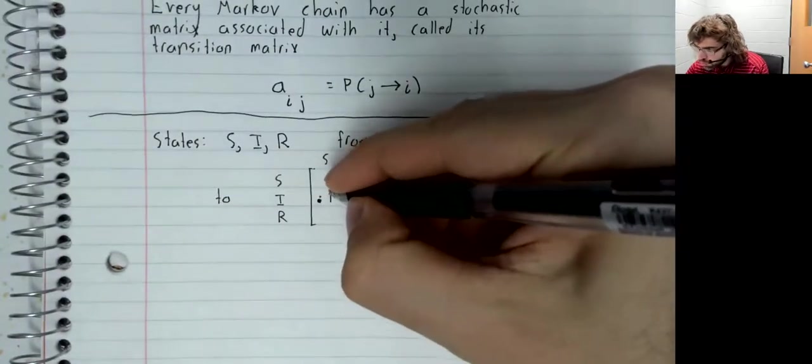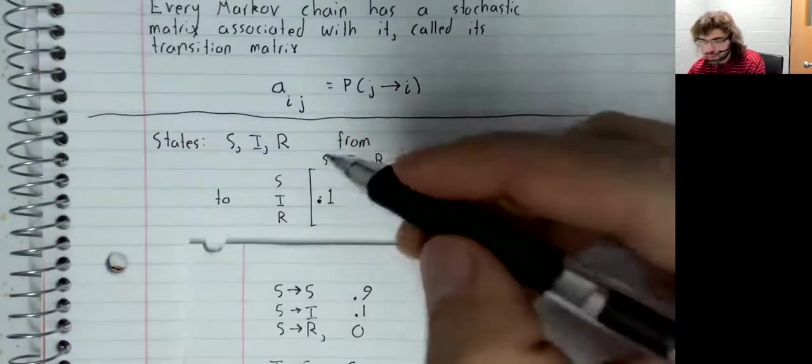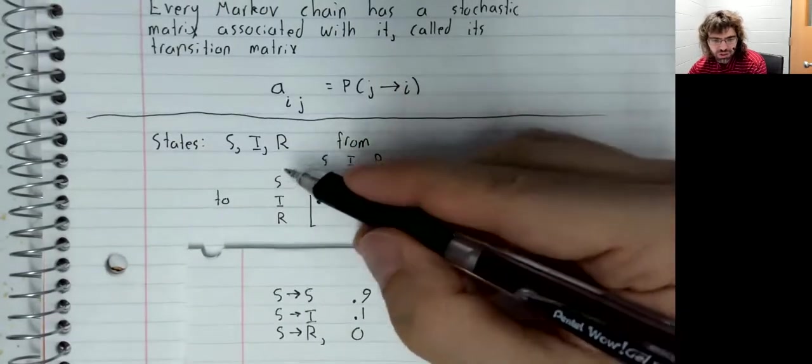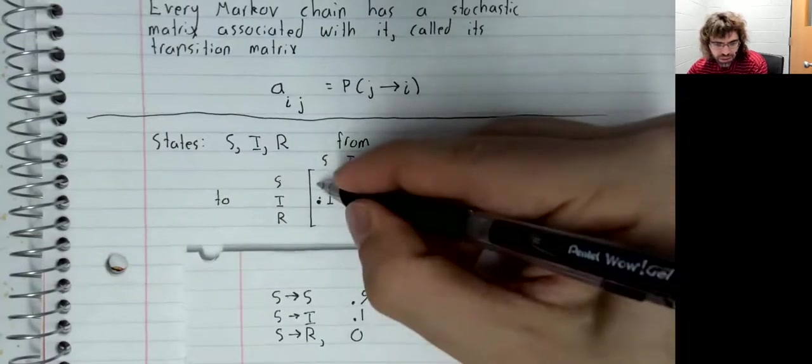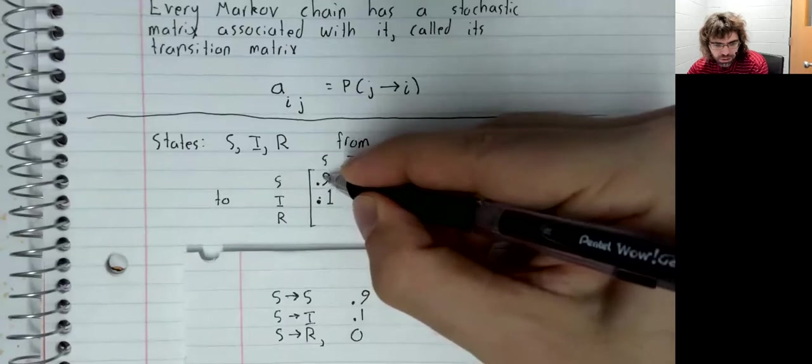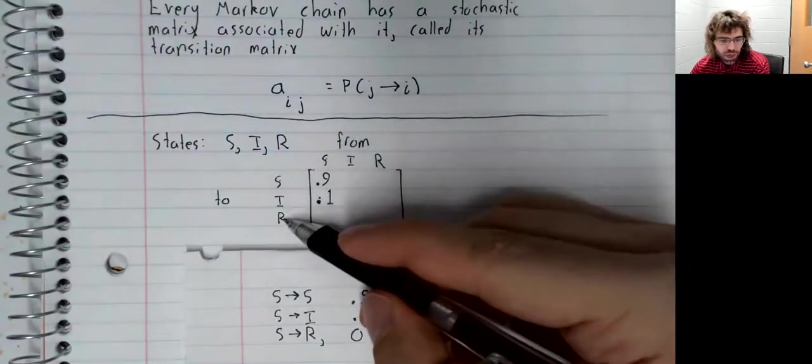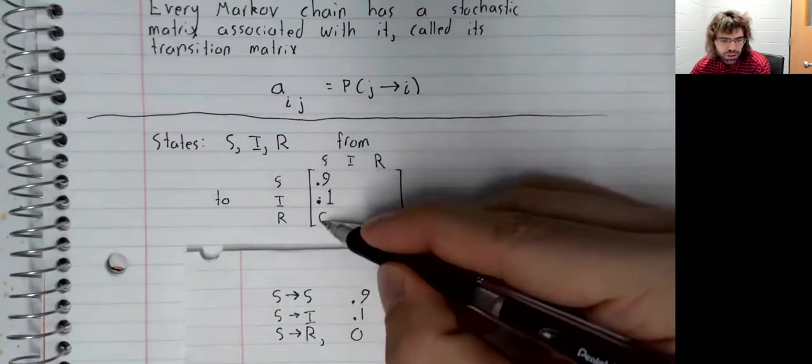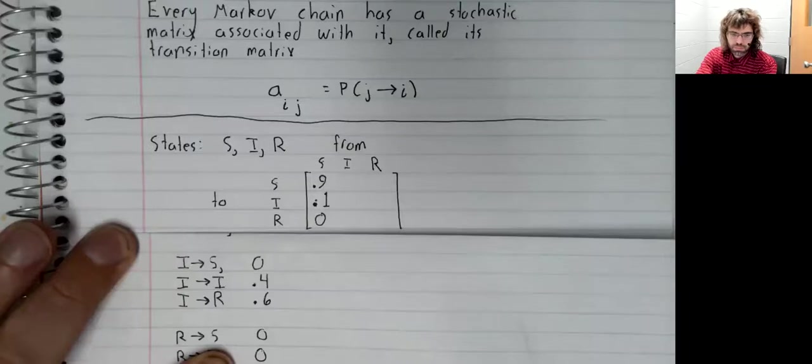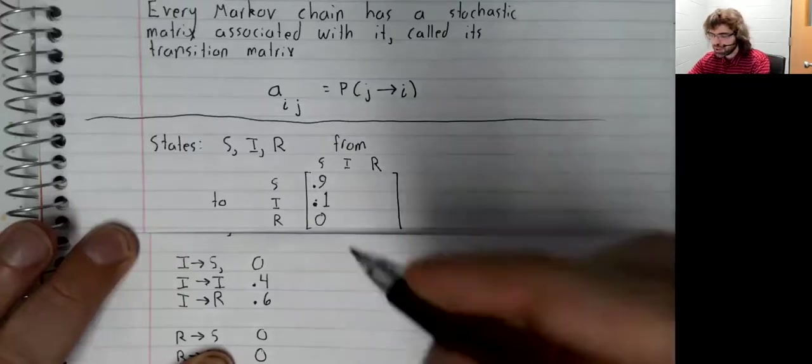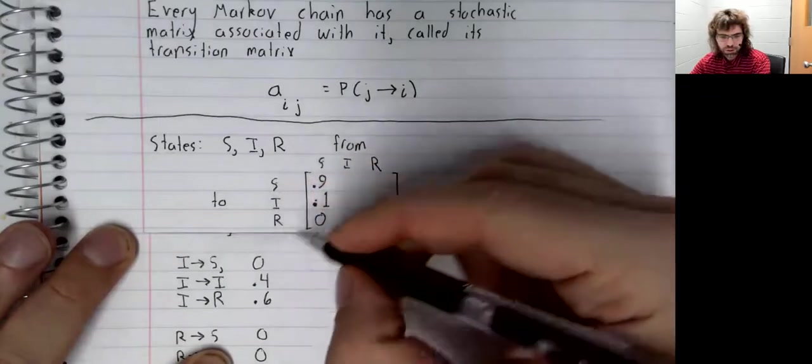The probability of going from S to S is 0.9. The probability of going from S to R is 0. The probability of going from I to S is 0.